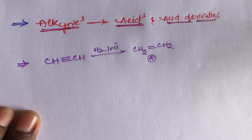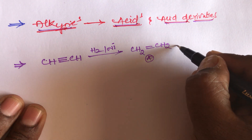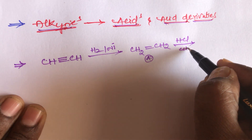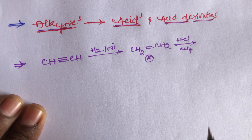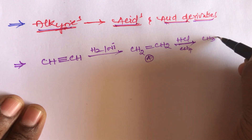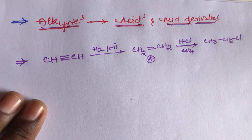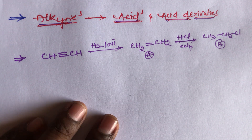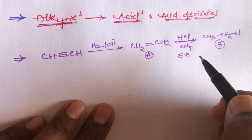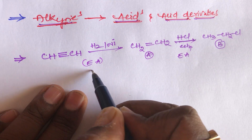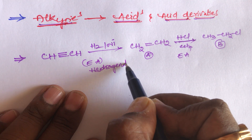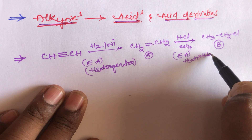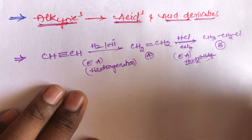Ethylene will be formed. When ethylene reacts with hydrochloric acid HCl in the presence of CCl₄, we get CH₃CH₂Cl — ethyl chloride will be formed. This is compound B. This step belongs to electrophilic addition reaction — that is hydrohalogenation, meaning addition of one hydrogen and one halogen to give ethyl chloride.